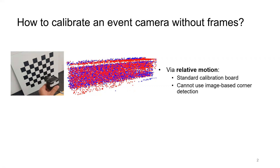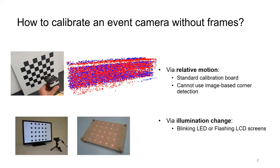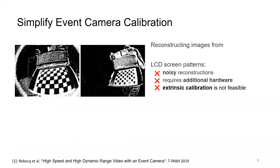Therefore, standard calibration frameworks cannot be used. Recent calibration methods rely on the usage of actively illuminated patterns such as blinking LED or electronic display devices. Reconstructing images from the LCD pattern leads to noisy images. This method requires a custom-built calibration board and extrinsic calibration between the event camera and standard camera is not feasible.